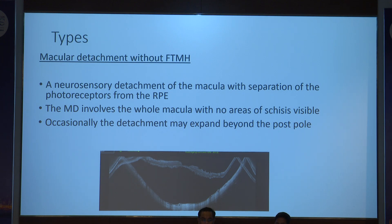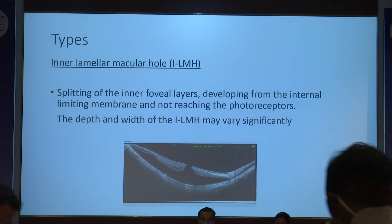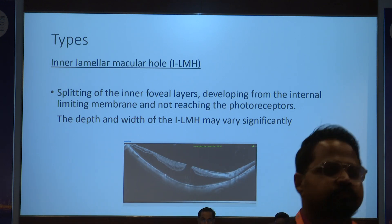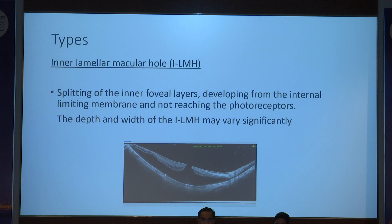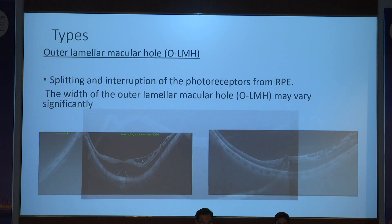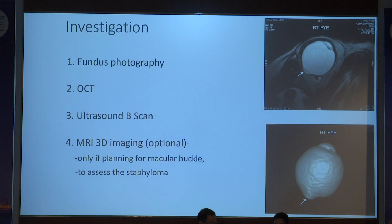Occasionally the detachment may extend beyond the posterior pole. Inner lamellar macular hole occurs when splitting of inner foveal layers happens from the ILM but not reaching the photoreceptors. Outer lamellar macular hole involves splitting and interruption of photoreceptors toward the RPE side. Then there is macular detachment where RD is limited to the macula with full-thickness macular hole. Investigations include fundus photography, OCT, ultrasound B-scan, and MRI very rarely, particularly when planning a macular buckle to assess staphyloma shape, location, and dimensions.